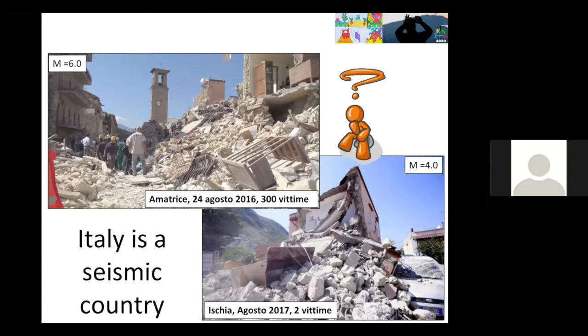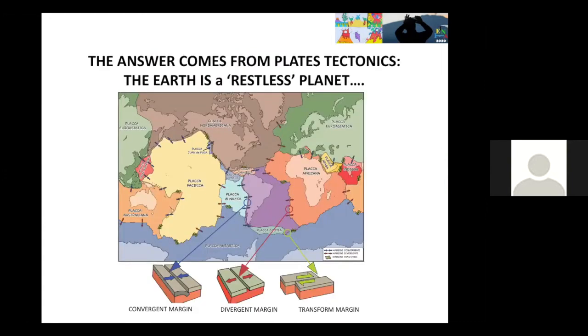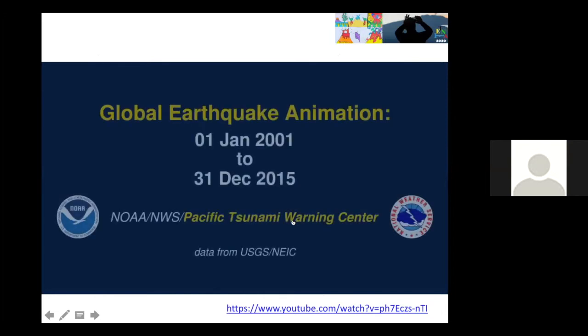We know that Italy is a seismic country from the plate tectonic theory. Today we know that the lithosphere, the upper part of our planet, is a puzzle of plates and these plates move and interact with each other in different ways as we see from this picture. They can converge, diverge, or move one beside the other. This interaction occurs along their boundaries, so these regions are very active areas.